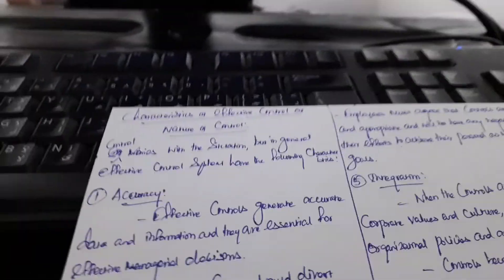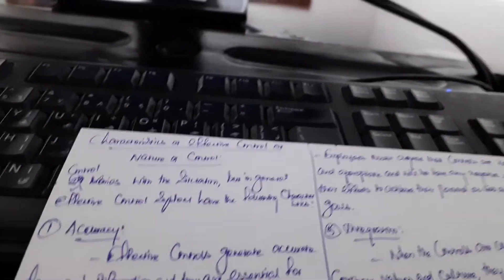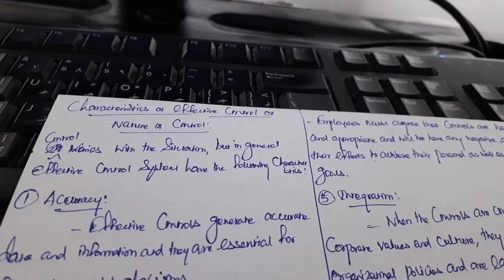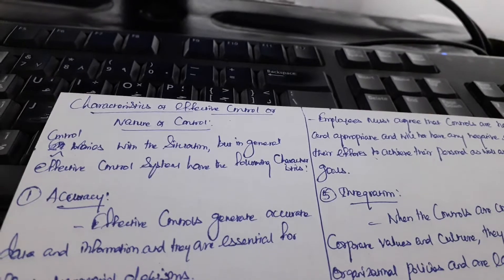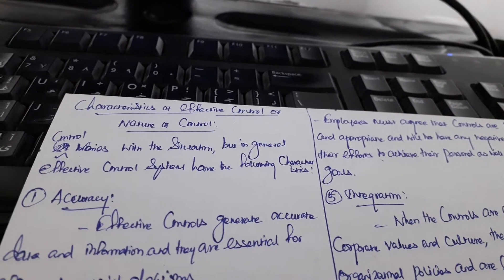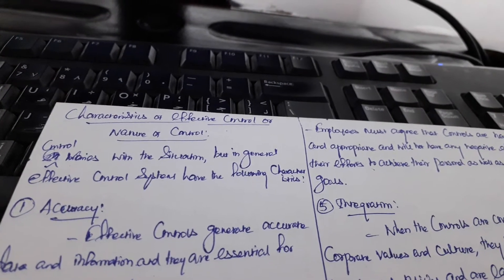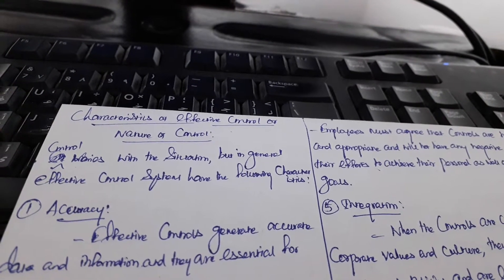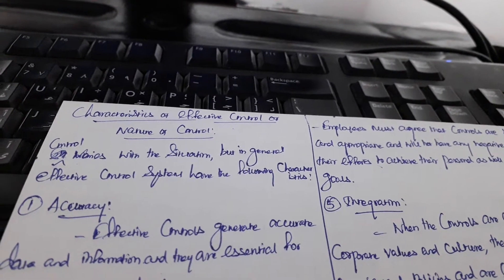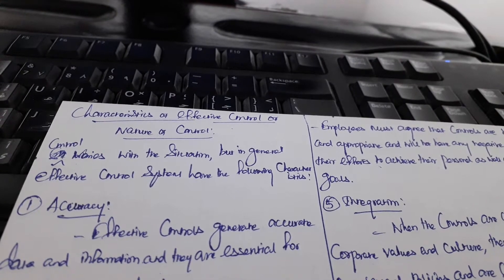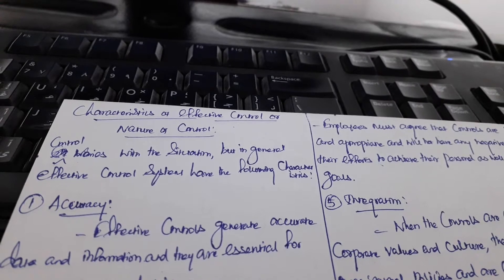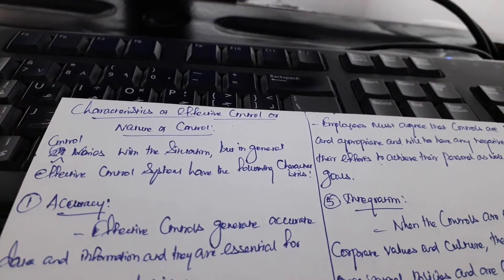Hi students, we are going to look at another topic — the characteristics of effective control, or the nature of control. One management level question is how effective control is. Control varies with the situation, but in general, effective control systems have the following characteristics.